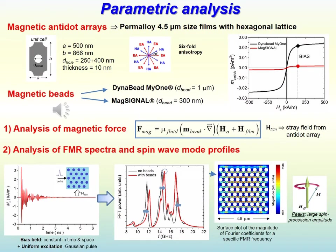In the parametric analysis, the magnetic antidot arrays are permalloy films with hexagonal lattice, with hole diameter variable between 200 and 400 nm. Two types of magnetic particles are considered to study the mechanism of detection. They are commercial magnetic beads which can be employed in biosensing and bioseparation: the Dynabed has a size around 1 micrometer, while the MagSense has a size of about 300 nm.